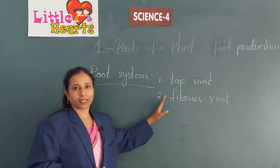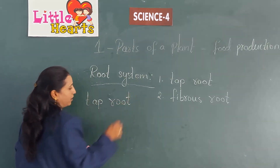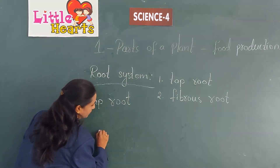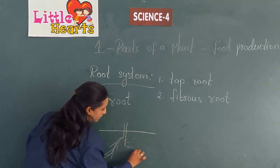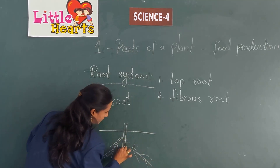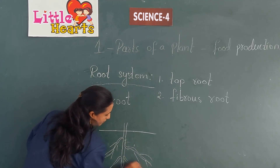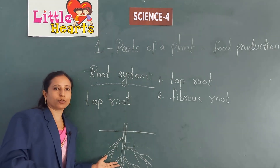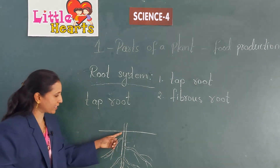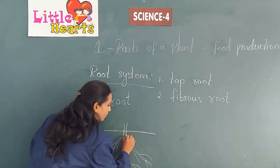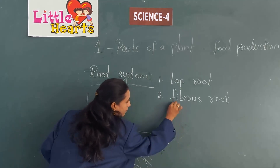So what is a tap root and what is a fibrous root? Looking at this picture of the tap root, this root has one main root which starts from the stem here under the ground. This is called the main root.